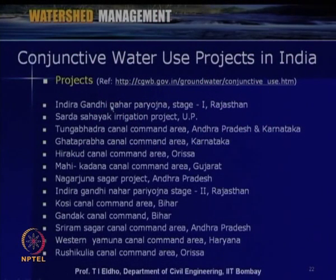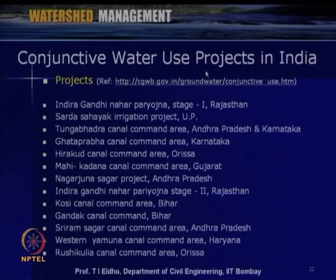In India, conjunctive water use projects have been implemented at various locations, monitored by the Central Ground Water Board and Central Water Commission with funding support. Some important projects include: the Indira Gandhi Nahar Pariyojana project, Sardasak irrigation project in UP, Tungabhadra canal command area, Radaprabha canal command area, and Hirakud canal command area. Details of these projects are available on the Central Ground Water Board website.